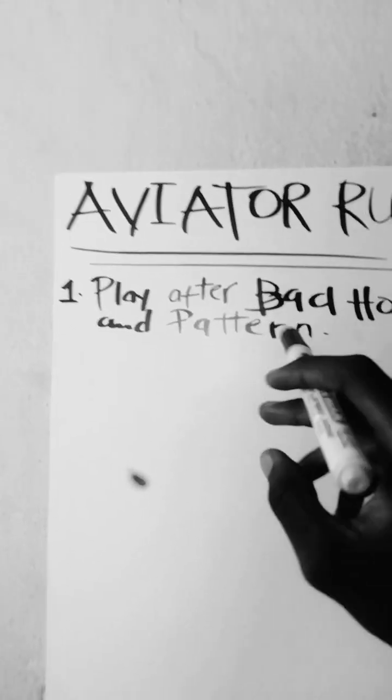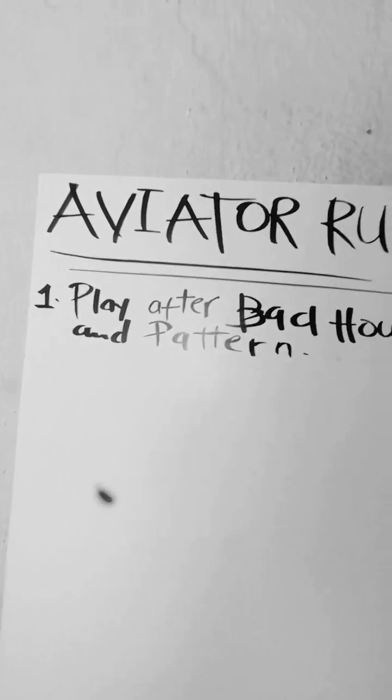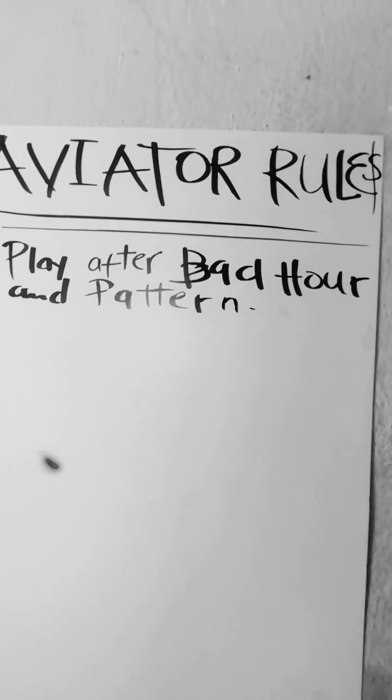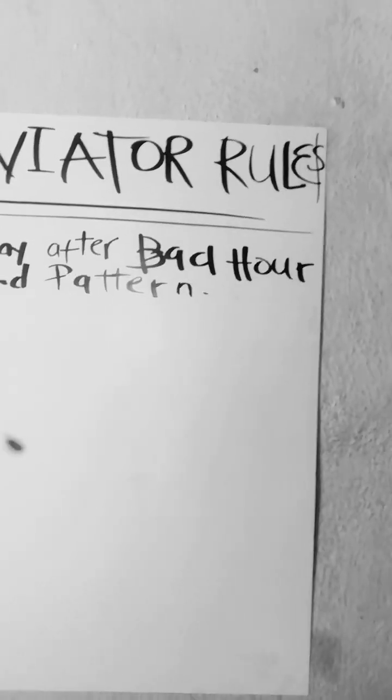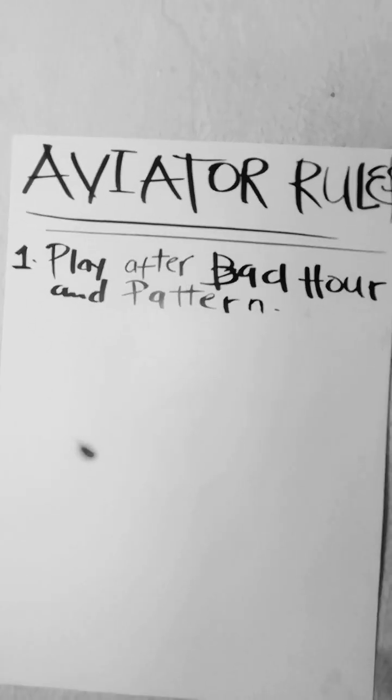A bad hour is basically when you have five or more blues in a row. Sometimes you can have more, up to 10 or 15. The whole thing about this rule is we're telling you to play after you see that bad hour.